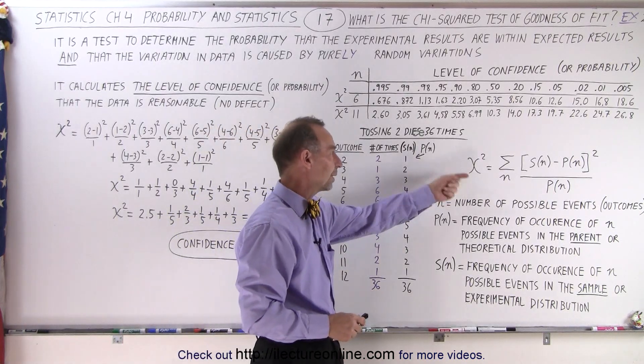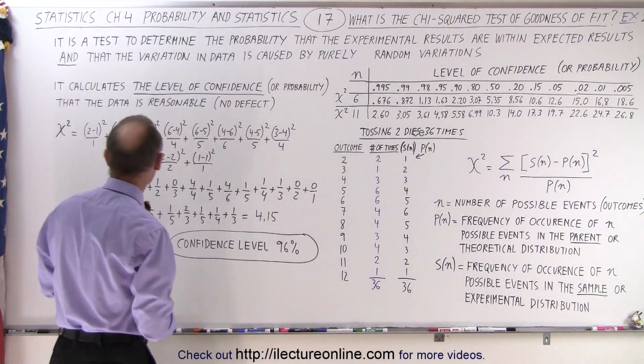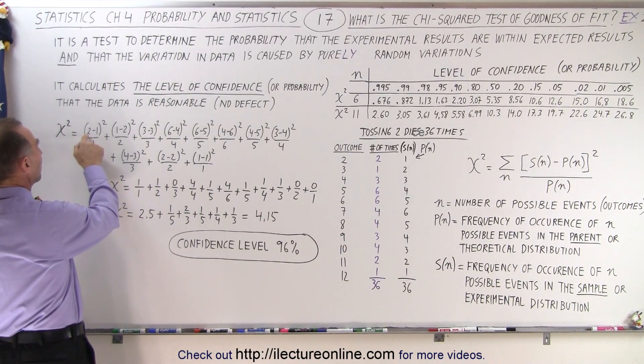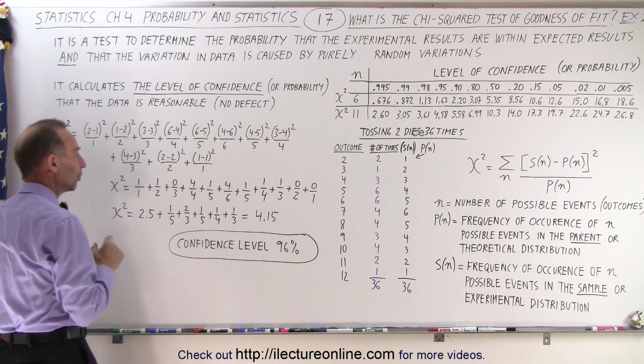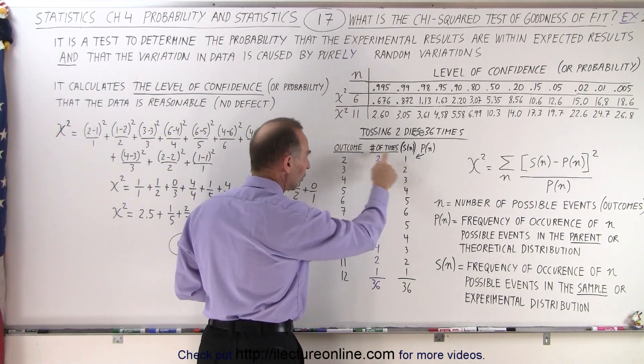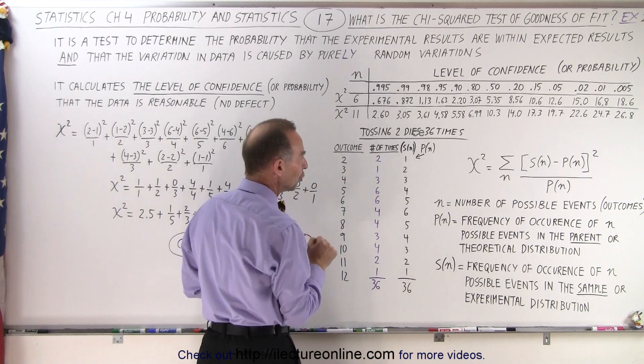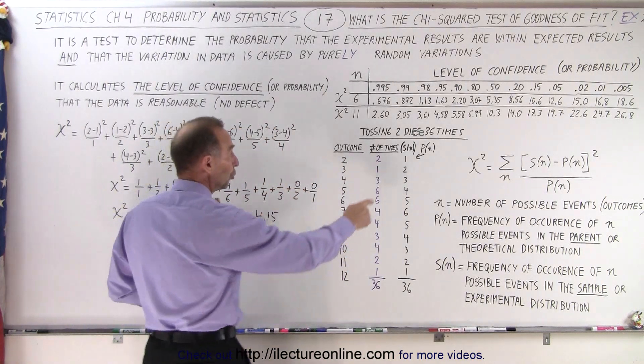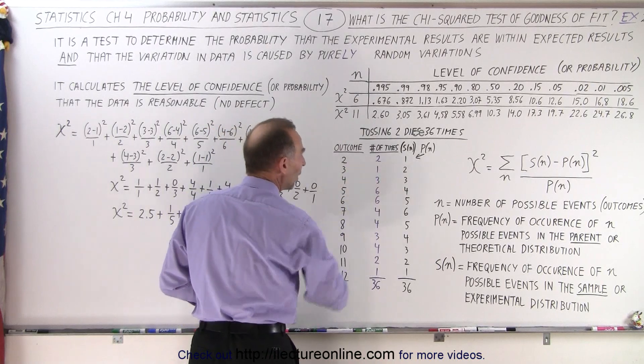So, here's the equation in which we calculate chi-squared, and this is how we do that. Remember, we take the difference between the experimental result and the theoretical result. We should only have one occurrence of getting a 2, instead we've got 2. We should, theoretically, this is my probability, two occurrences of getting a 3, and we've only got 1, and so forth.